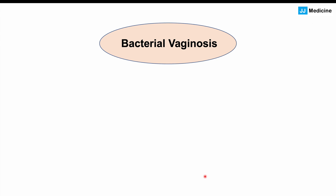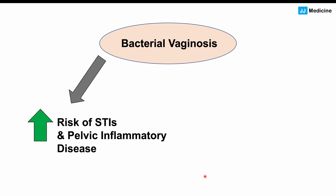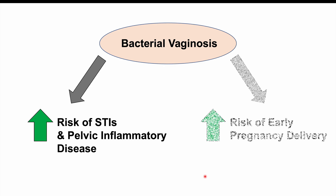Bacterial vaginosis can also increase the risk of other conditions and complications. These include increased risk of sexually transmitted infections (STIs), because bacterial overgrowth can disrupt the immune barrier within the vagina. There is also increased risk of human papillomavirus (HPV) infections and reactivation of HPV, increased HIV shedding in patients who have HIV, increased risk of pelvic inflammatory disease, and an increased risk of early pregnancy delivery before 37 weeks of gestational age.